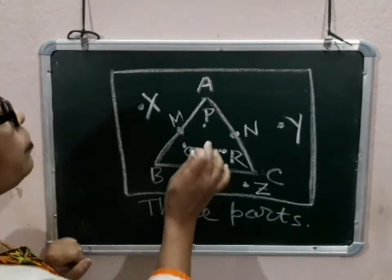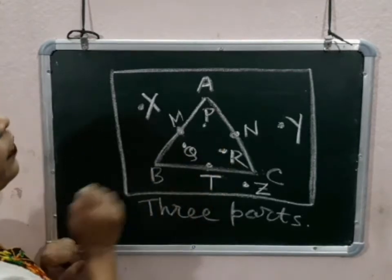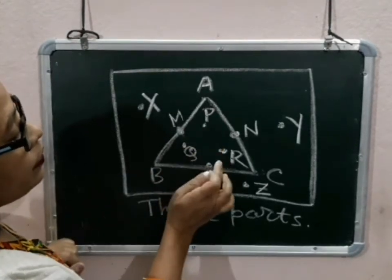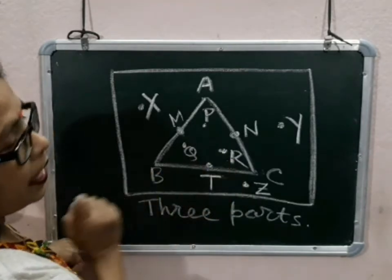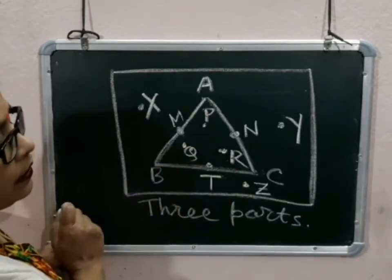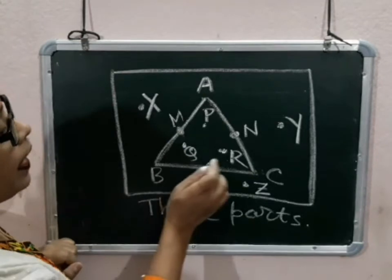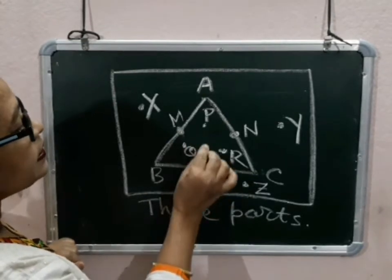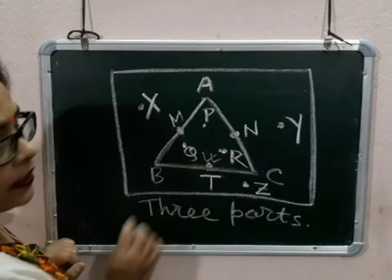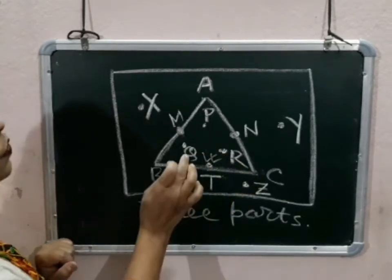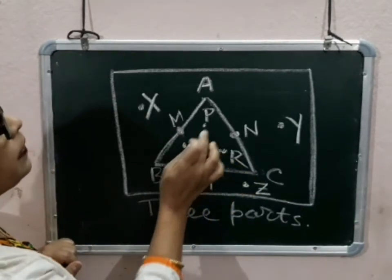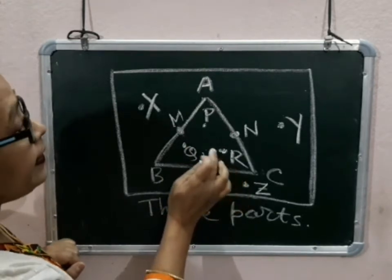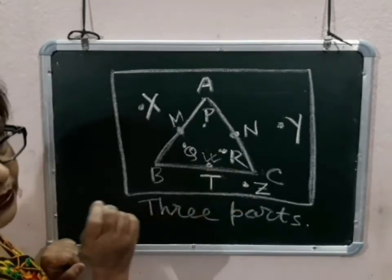First of all, look at this figure. Where are the points P, Q and R? Points P, Q and R are all inside the triangle. So these points P, Q and R are called the interior of the triangle.